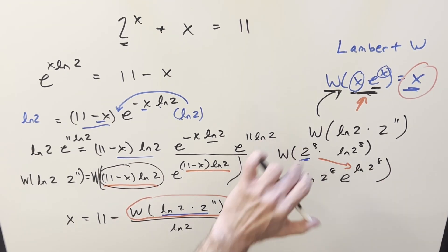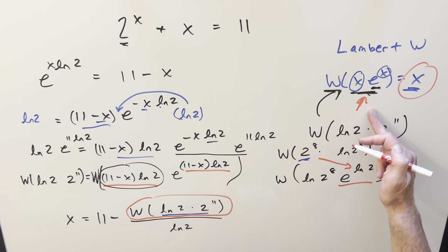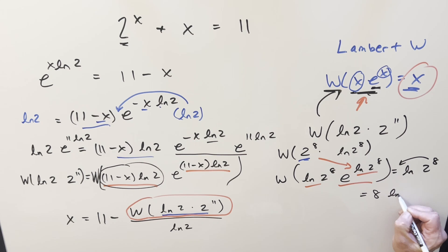But now writing 2 to the 8 in this form here, we now match the formula. We've got the same coefficient and exponent. So taking the Lambert W on this, we're going to have just natural log 2 to the 8. But then with log properties, we can just put this back and we can write it as 8 ln 2.